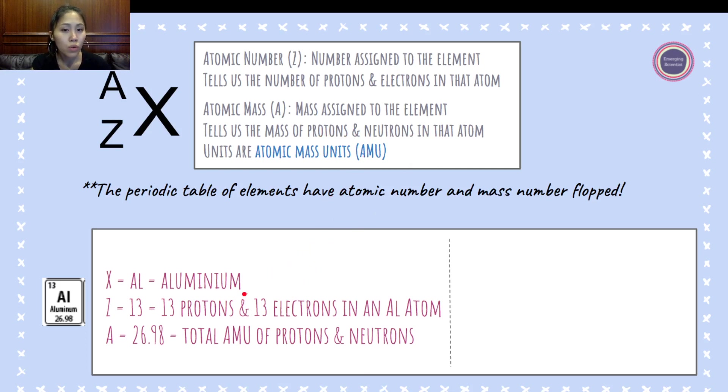What's important here is it's not 26.98 protons and 26.98 neutrons. It's not the same as how the atomic number is assigned for protons and electrons. Here, the atomic mass, that mass number, is the total amount. So 26.98 is the total amount of protons and neutrons in the center. The atomic mass is pretty much the mass number found at the center of an atom in the nucleus.